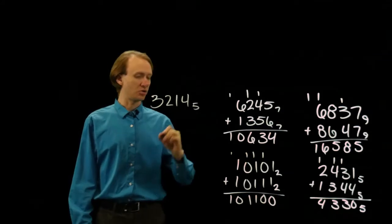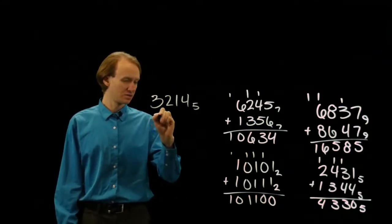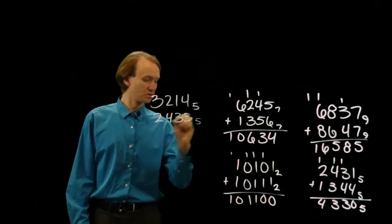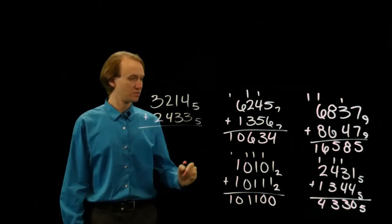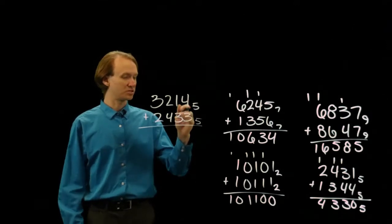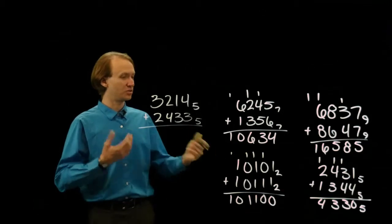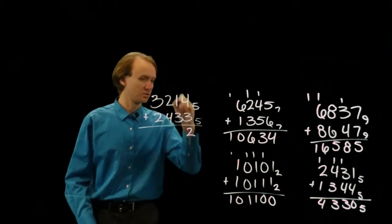There's another number in base 5. So, 4 plus 3 isn't 7, because I don't have 7s in base 5. I actually have 5 plus 2, which will give me 12.